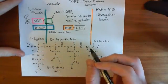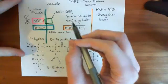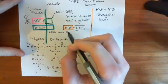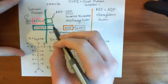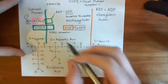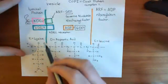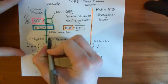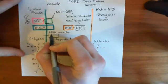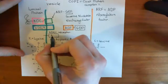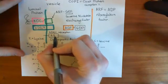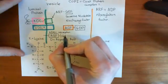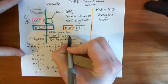When ARF has a GTP bound to it, it then becomes active. What's going to happen is it's going to change conformation, expose a hydrophobic tail, and now it's going to be able to bind into the cis-Golgi membrane. It's got this hydrophobic tail that is now stuck into the membrane of the cis-Golgi, and you now have this ADP ribosylation factor which is bound to guanine triphosphate instead of guanine diphosphate.